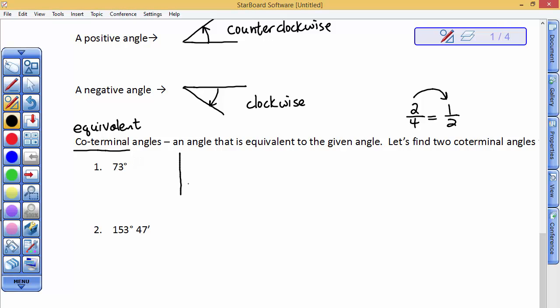So, I'm going to draw a picture. So, here's the first quadrant, right here. Here's my x-axis, and here's my y-axis. So, a 73 degree angle would be very close to the y-axis, because that's 90 degrees. So, I'm going to describe this as 73 degrees, positive, counterclockwise, remember.